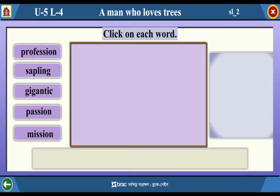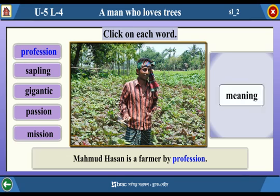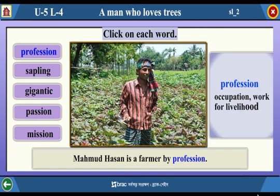Vocabulary. Click on each word. Profession — Mahmoud Hassan is a farmer by profession. Meaning? Occupation. Work for livelihood.